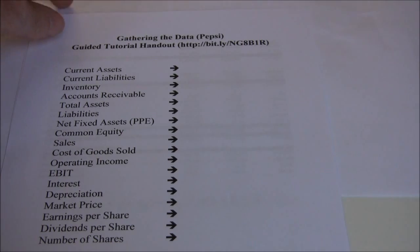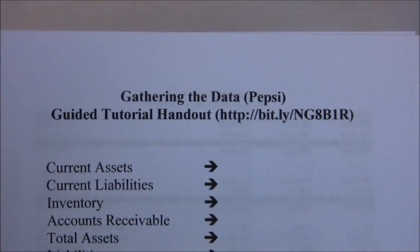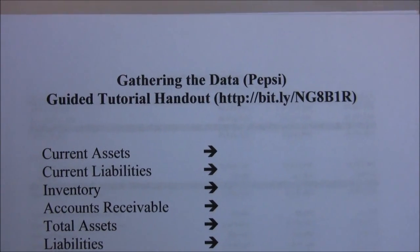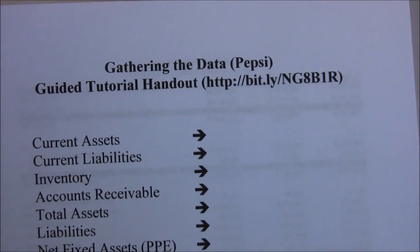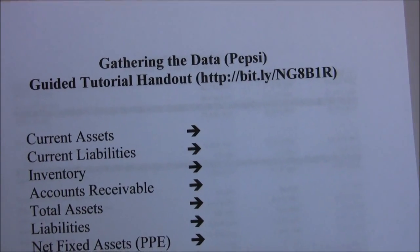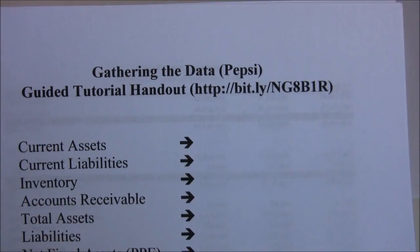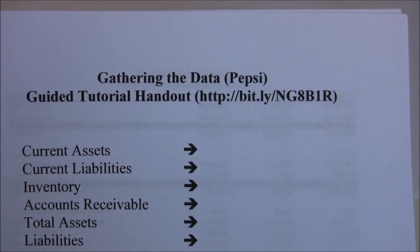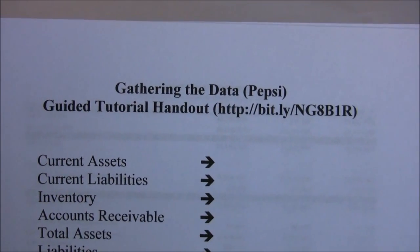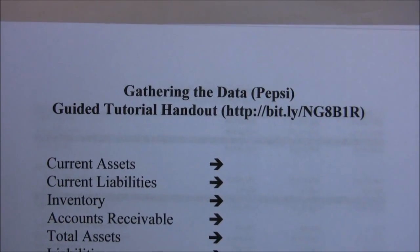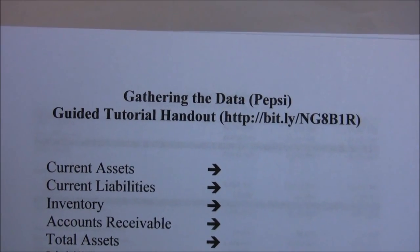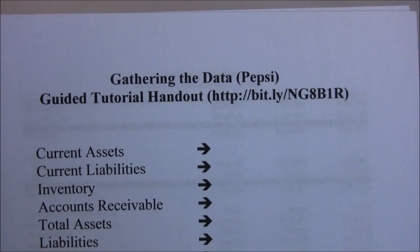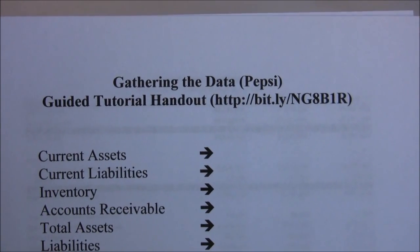In this video we're going to walk through calculating ratios for Pepsi. You can find the data we're going to use in the guided tutorial handout, available in Canvas or at the bit.ly address — you can download the three pages including the income statement, balance sheet, and statement of cash flows. If you're doing this for any other company, a couple of places I like to go are Yahoo Finance at finance.yahoo.com, which has a great source of data for individual companies.